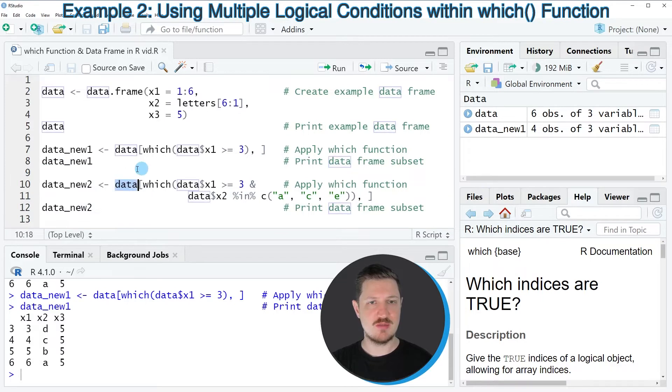So once again I'm specifying the name of our data set, then I'm using square brackets, and then I'm applying the which function. However, this time I'm using the and operator to specify a second logical condition. So in this case, the second logical condition extracts only those rows where the column x2 contains a value that is equal to the character a, c, or e.